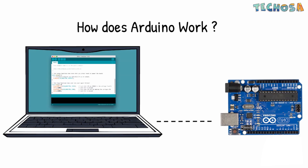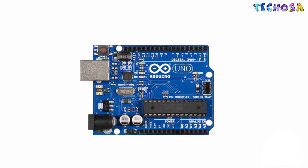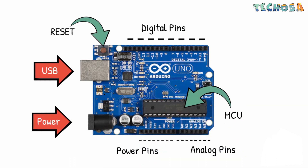We can use a regular USB connection to upload the code using a computer. Once the code is uploaded, it keeps running as long as it keeps getting power. Let's have a closer look at the Arduino Uno. The main component is the MCU that handles all the logic. We also have a USB connection for uploading the program, a power jack for connecting an external battery to make it portable, and a reset button.